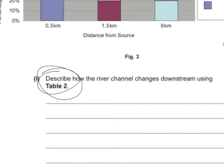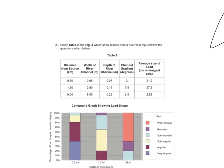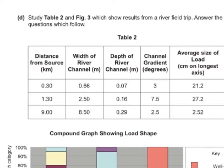So the command word is describe. It means you've got to say what you see. And because they're talking about table two, you've got to use figures from the table. So a standard answer will select distance, 0.30 kilometers from the source. It gives you a width of 0.66 meters and a depth of 0.07 meters. And the channel gradient has a figure of three degrees.